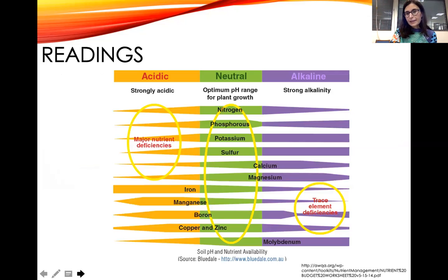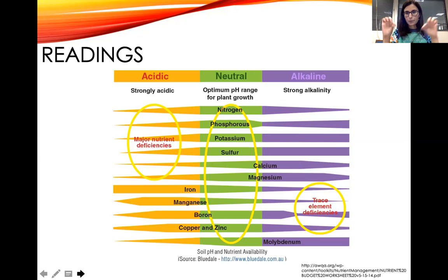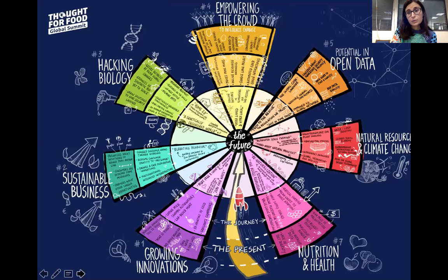Looking at the readings again: neutral pH in a particular range is good for nutrients like nitrogen, phosphorus, and potassium — the NPK macronutrients. As soil becomes alkaline or acidic, certain deficiencies can occur based on the breadth of the bar on the chart. A student then shared a related point about their cousin's biotech research.